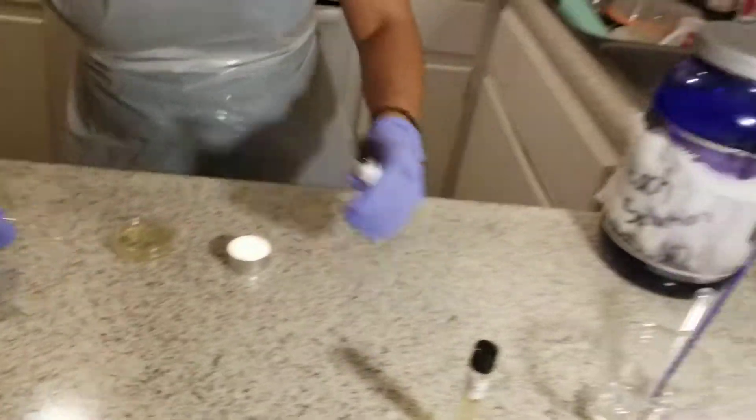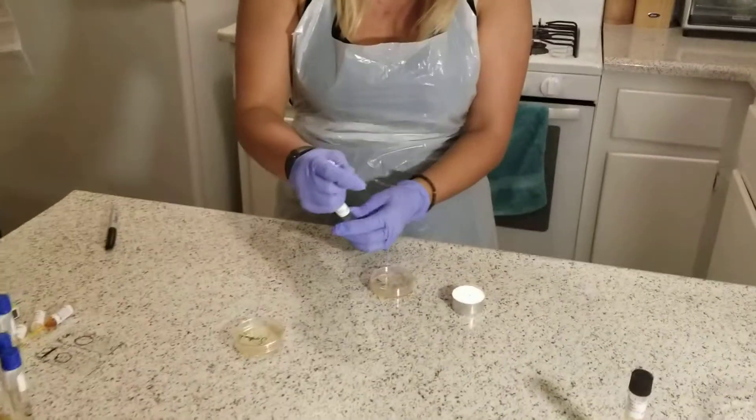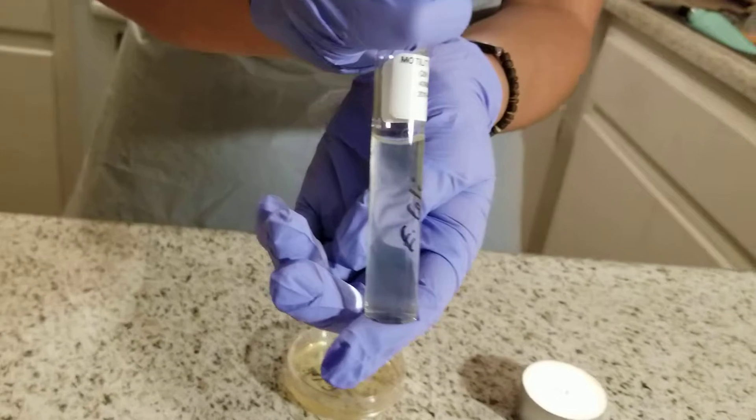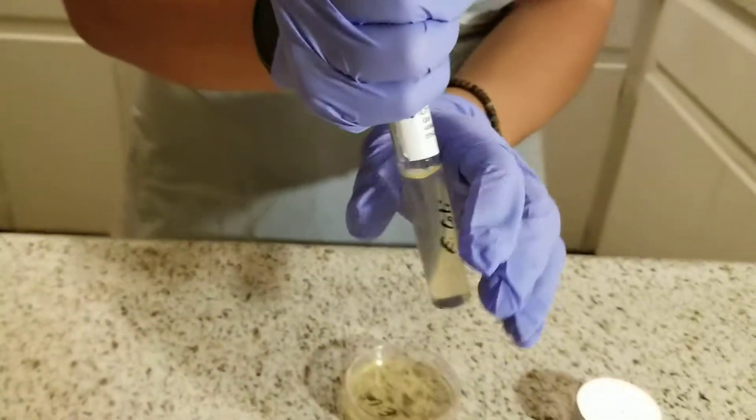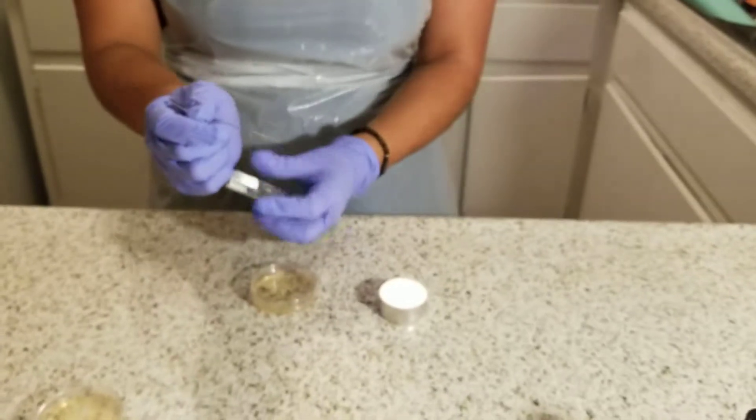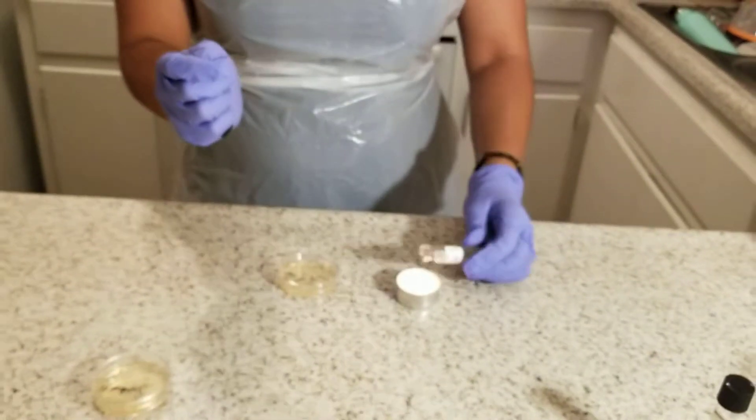Then I get my motility tube labeled with E. coli and sterilize the lid by passing it over the flame.